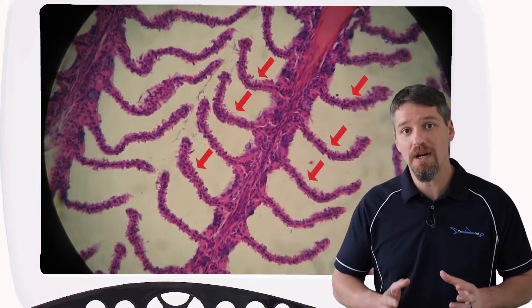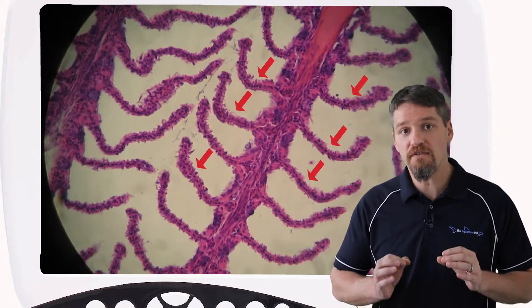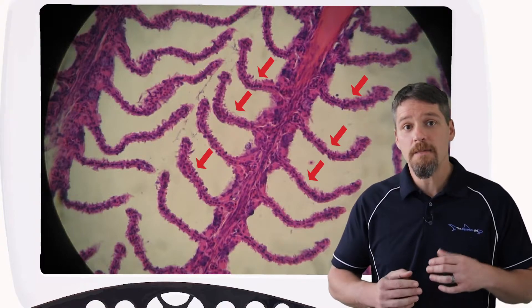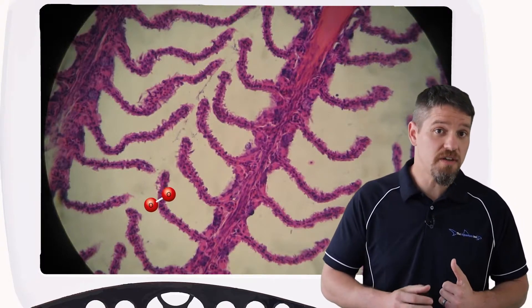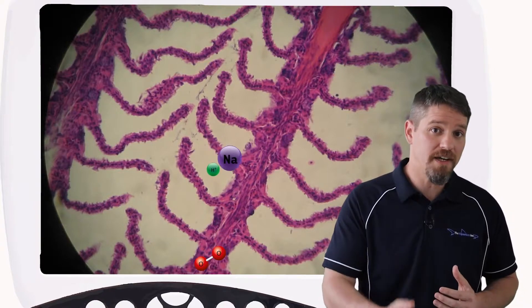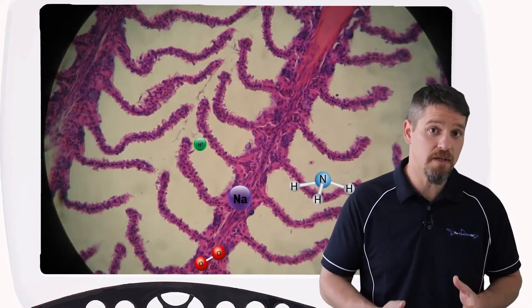As we'll go through in detail in the fish anatomy course, the gill epithelium of the secondary lamellae pointed out here is only a few cell layers thick. This allows for efficient oxygen diffusion as well as an ion exchange for osmoregulation and waste excretion.